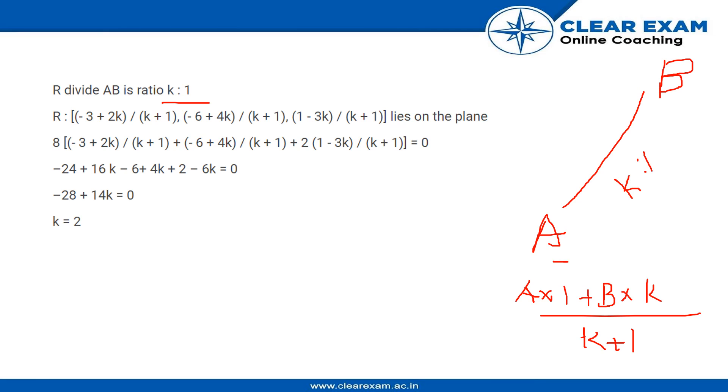will put that point in the equation of the line. As we know, if that point is the one that divides A and B from the plane in the ratio K is to 1,